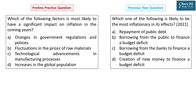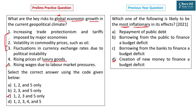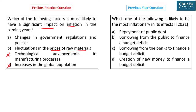Which of the following factors is most likely to have a significant impact on inflation in coming years? Options are: changes in government regulations and policies; fluctuations in prices of raw materials; technological advancements in manufacturing; and increase in global population. Technological advancement will not cause inflation, and increase in global population could be a boom rather than a bane. Government policy changes can affect inflation, but it depends on the type — some ease inflationary effects, others increase them. Fluctuations in raw material prices will definitely cause inflation, as they change the cost of production. So the best option is B.